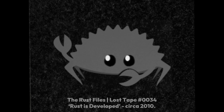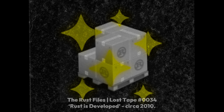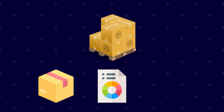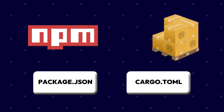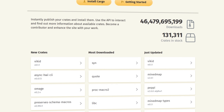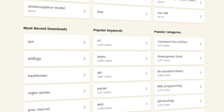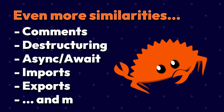That was a lot — mutability, references, ownership, compiling. Let's take a quick break and look at a few things that will look very familiar to you as a JavaScript developer. When Rust was being developed, they built its package manager, Cargo, based on the best parts of NPM. It feels very much like NPM, but with superpowers — it handles packages, test running, compiling, and more. Instead of a package.json file, you have a cargo.toml file. Instead of packages, you have crates, and you can explore all 130,000+ of them at crates.io, an online registry like npmjs.com. You'll also notice similarities like comments, syntax, destructuring, async/await, imports, exports, and more.